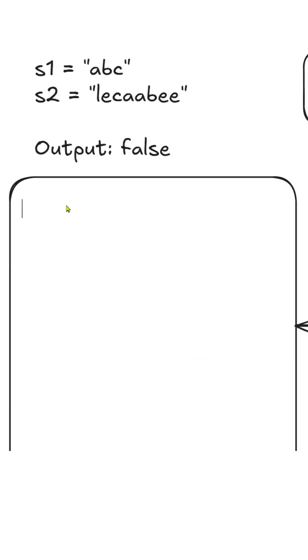To do this, we would require two frequency mappings, one is s1's frequency and the other is the window frequency.